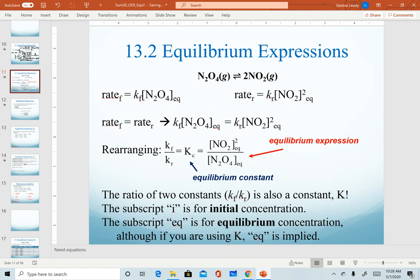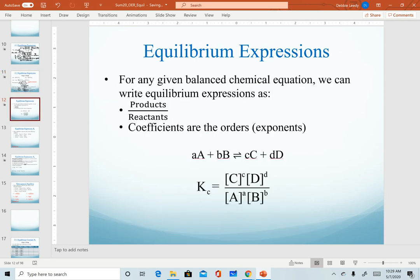On the next slide, I have all of this typed out. This Kc value, capital K, is our equilibrium constant. This equation is called the equilibrium expression. That capital K comes from the ratio of our two rate constants of the forward and reverse reactions. Some subscripts that you'll see: if you see the subscript I next to a concentration or pressure, that's measuring our initial or starting amount. The EQ tells us that we are specifically measuring equilibrium. Equilibrium doesn't have to be listed because if you're working with an equilibrium constant, then that EQ is implied.